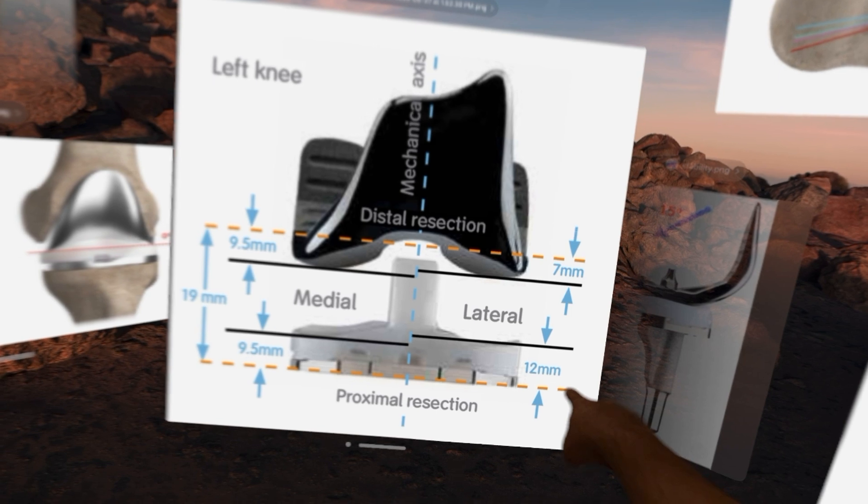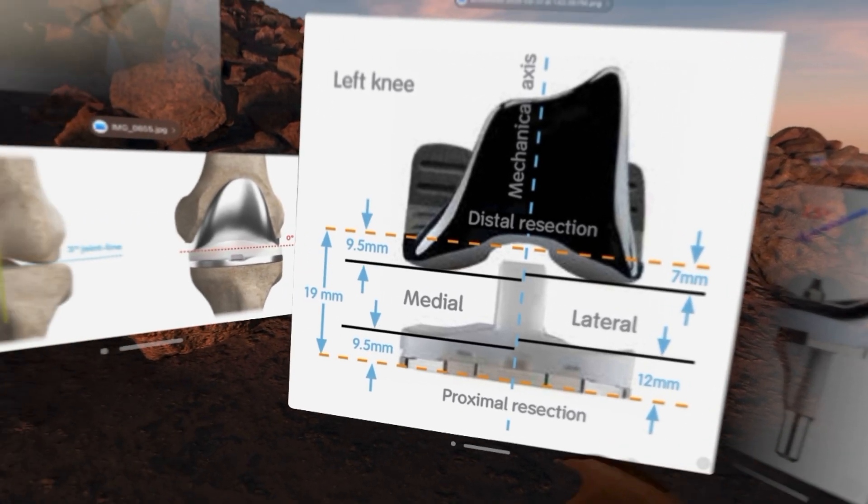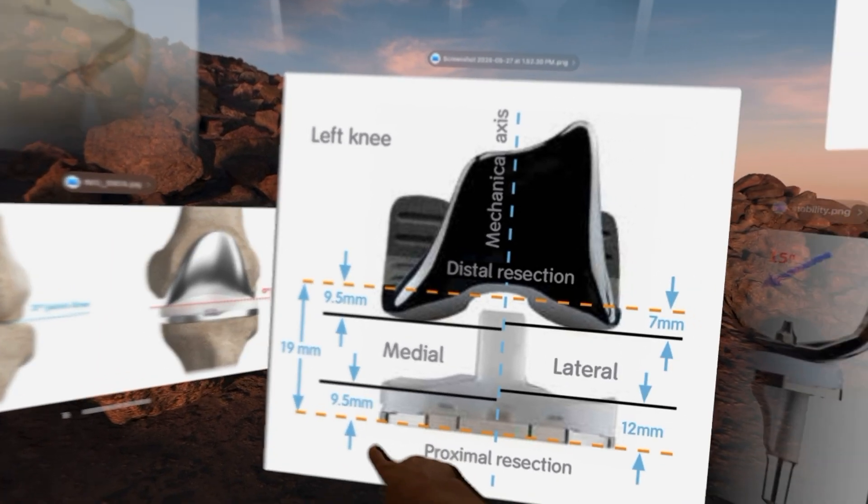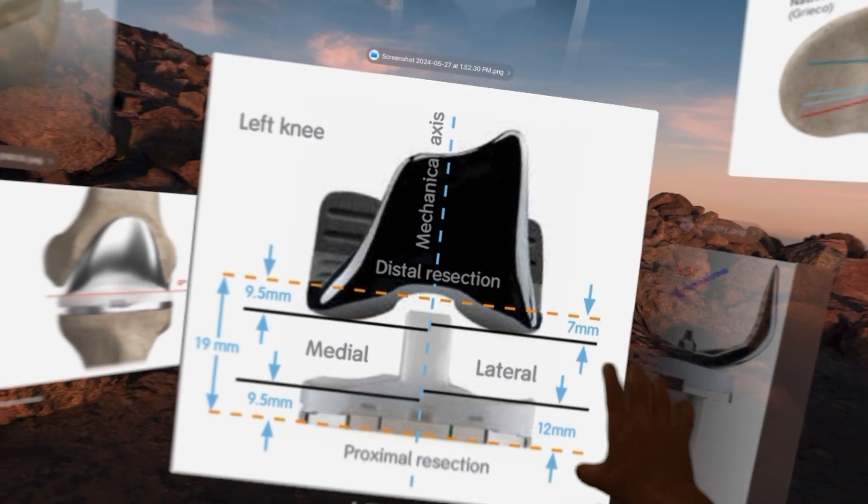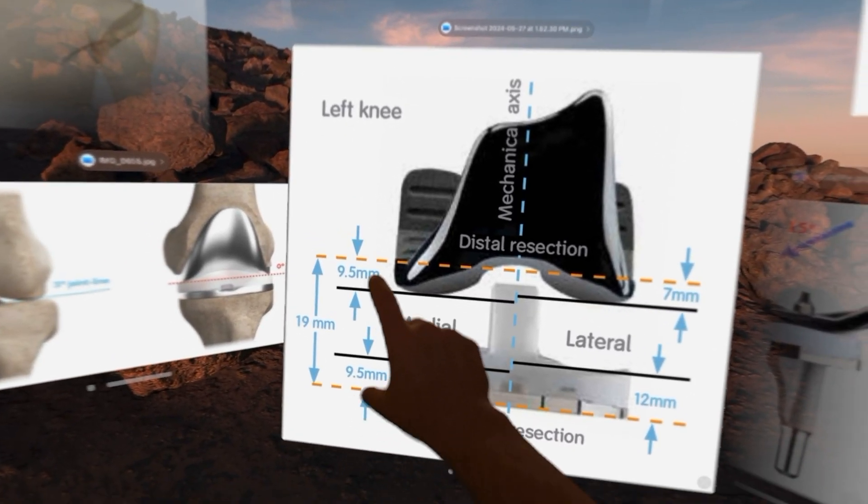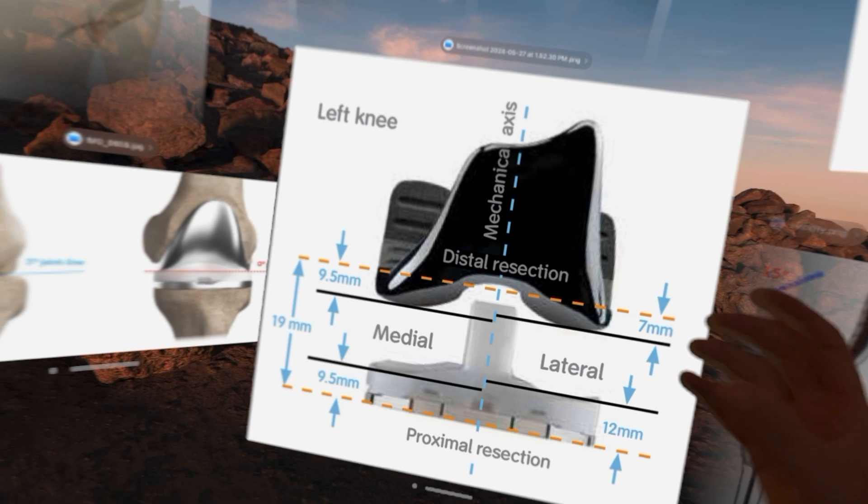So if you add up the 7 millimeters and the 12 on the lateral side, you get 19. If you add up the 9.5 and the 9.5 over here, you still get to 19. So you're 19 on the lateral side, 19 on the medial side, and that means in surgery we're creating a straight across box.